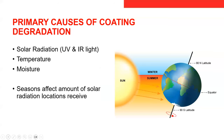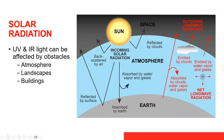Now let's talk about performance and causes of coating degradation. Primary causes are solar radiation — both ultraviolet and infrared reflective light — as well as temperature and moisture. Seasons can affect the amount of solar radiation at a given location. Solar radiation can also be affected by different obstacles: the atmosphere, different landscapes, and buildings. All of those are considerations when looking at what type of coating system is best for the project.